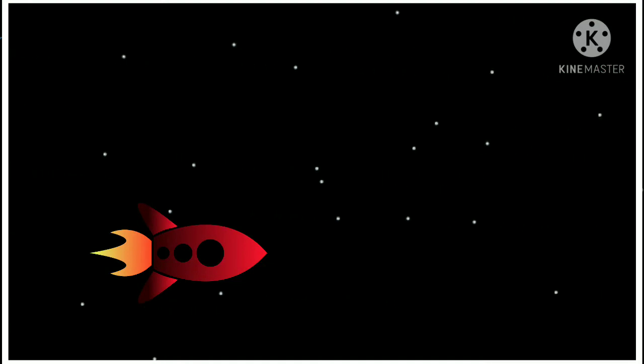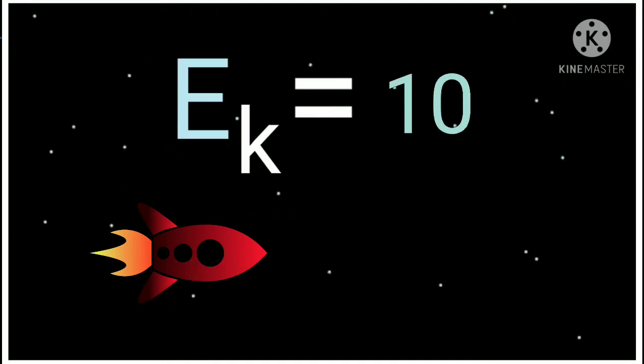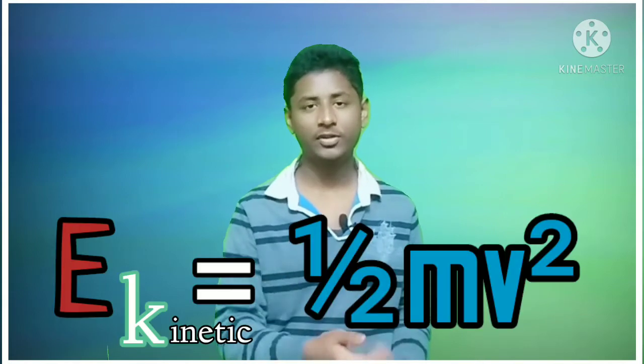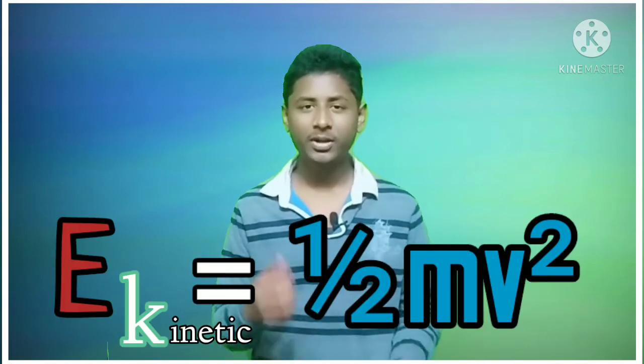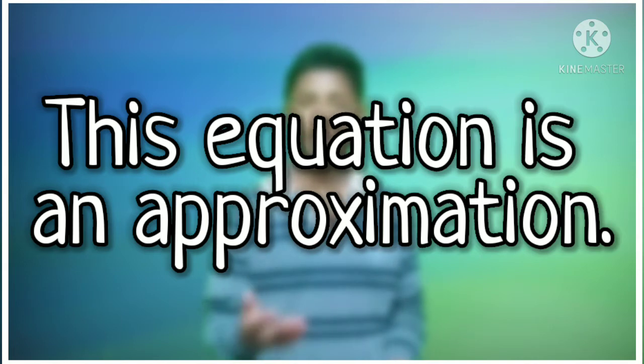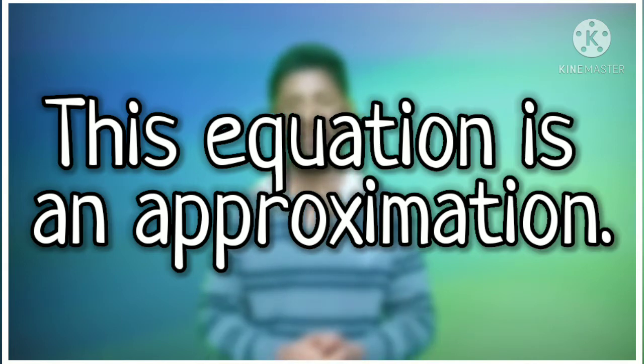We all know that the faster something moves, the more kinetic energy it gains, from the classical equation for kinetic energy: half mv squared. But this equation, as with most classical physics equations, is just an approximation. They work very well at slow velocities, but at high enough velocities they do not work well. The faster something moves the more kinetic energy it gains, but how much kinetic energy it gains is not correctly given by the classical equation.